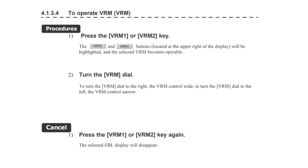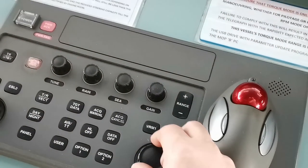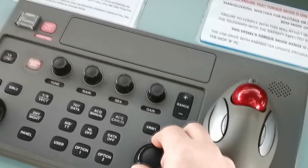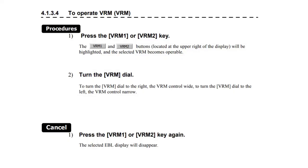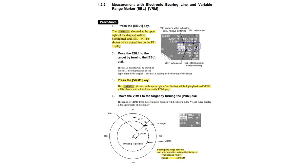Press the VRM 1 or VRM 2 key. The VRM 1 and VRM 2 buttons located at the upper right of the display will be highlighted and the selected VRM becomes operable. Turn the VRM dial to the right — VRM control wide; turn the VRM dial to the left — VRM control narrow. Press the VRM 1 or VRM 2 key again and the selected VRM display will disappear.